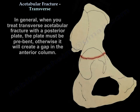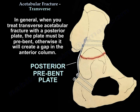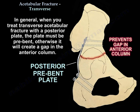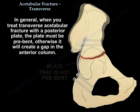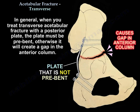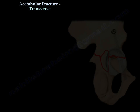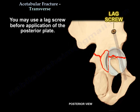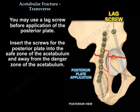When treating a transverse acetabular fracture with a posterior plate, the plate must be pre-bent; otherwise, it will create a gap in the anterior column. Alternatively, use a lag screw before applying the posterior plate. Insert the screws of the posterior plate into the safe zone of the acetabulum and away from the dangerous zone.